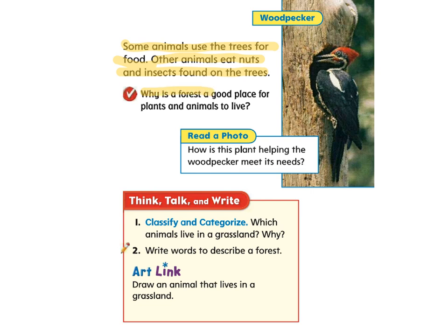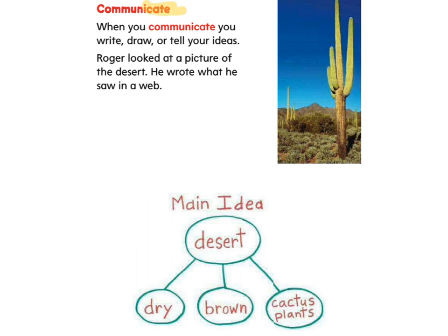Why is a forest a good place for plants and animals to live? Take a look at the photo here — how is this plant helping the woodpecker meet its needs? There are a couple of things that woodpeckers will get from the plants. Please think about what type of animals live in a grassland and why, and some words that would help you describe a forest. When you communicate, you write, draw, and tell your ideas.